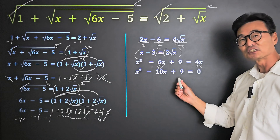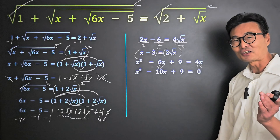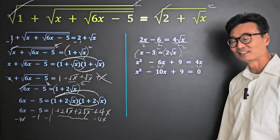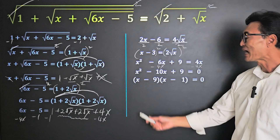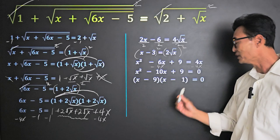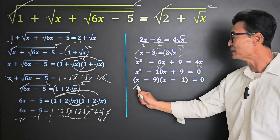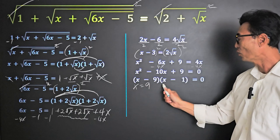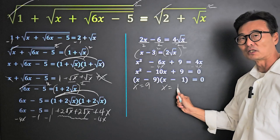To finish it up, we're going to factor this, where it's going to be x minus 9 times x minus 1 equals 0, leaving us with the answer of x equals 9 or x equals 1.